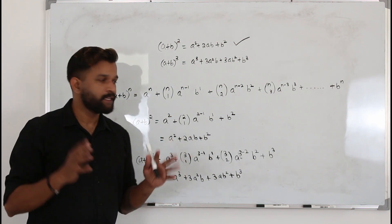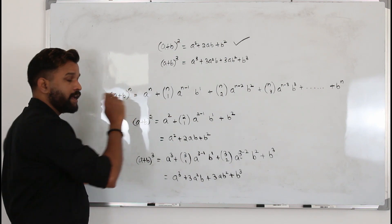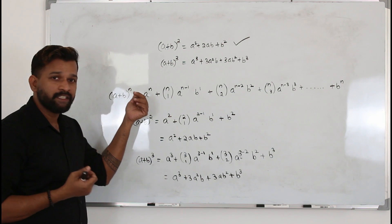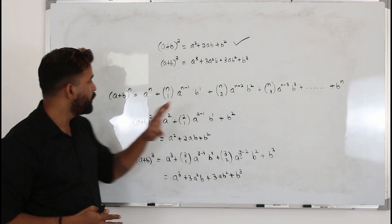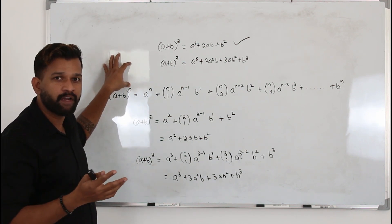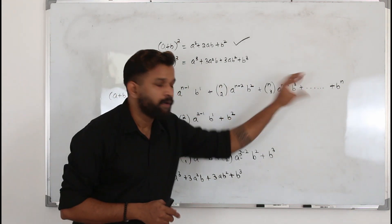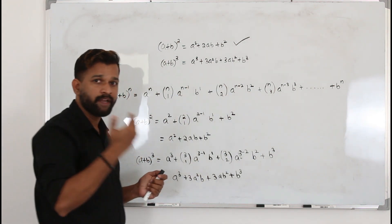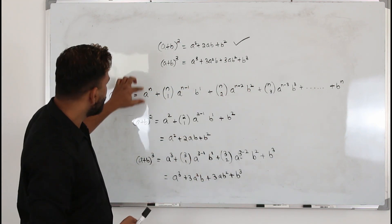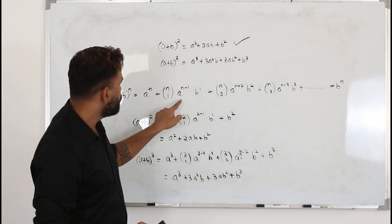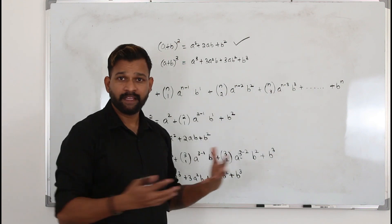This is how we use binomial expansion to find the expansion of an algebraic expression raised to a positive integer power. The power must be a positive integer. If it's negative, there's another binomial expansion taught in P3, not P2. Once you solve a few questions, you'll memorize the pattern: aⁿ, nC1, nC2, nC3... with powers of a decreasing and b starting from b¹, b², b³.